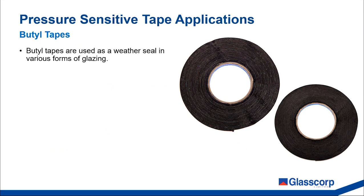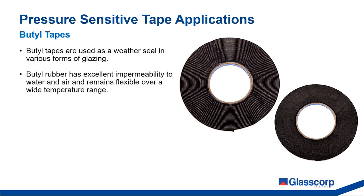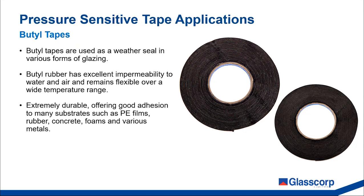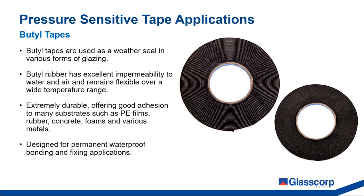Butyl tapes are used as a weather seal in various forms of glazing. They are made of butyl rubber — a material with excellent resistance to permeation from air, water, and other gases — and are also known for resistance to heat, chemicals, and UV. Butyl tapes are extremely durable, offering good adhesion to many common building substrates including low surface energy ones such as polyethylene building membranes. They are designed for permanent waterproofing, bonding, and fixing. Note that while technically double-sided, butyl tapes are not recommended for bonding applications.